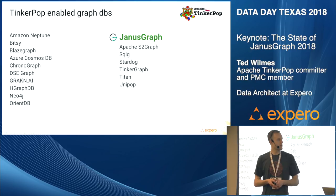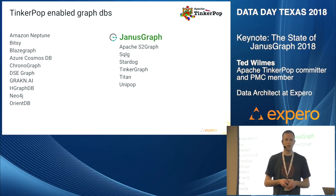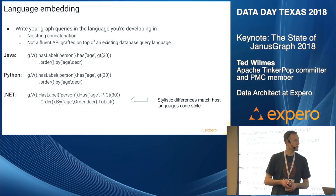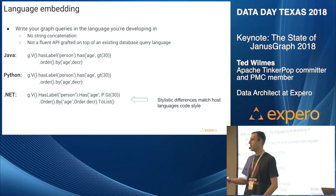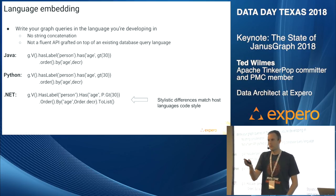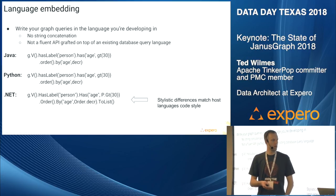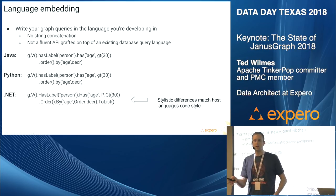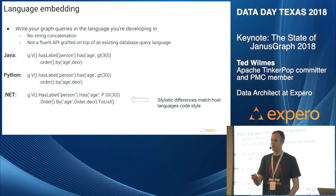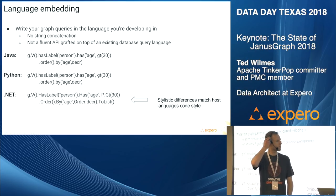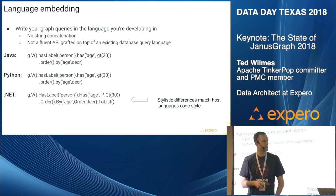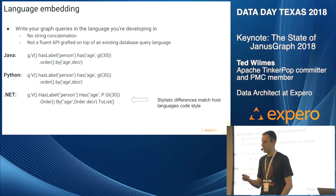Here are a few other TinkerPop-enabled graph databases. Even though there's not really a standard graph language right now, you can see that Gremlin has support across a large number of these databases. Language embedding is neat — it lets you write your graph queries in the language you're developing in. If you're writing a Java application using the TinkerPop driver to access JanusGraph, you can write your Gremlin query in Java just like you would in embedded mode — no need to build strings and send them over. It also makes it easy to switch between different graph database providers.